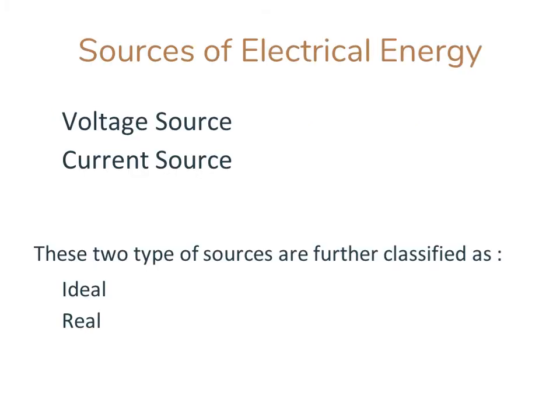Sources of electrical energy: There are two types of sources — voltage source and current source. These two types of sources are further classified as ideal source and real source.